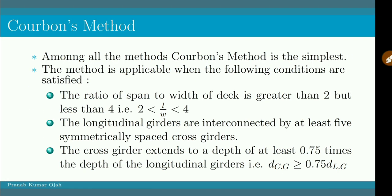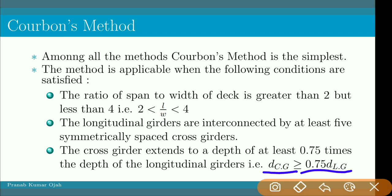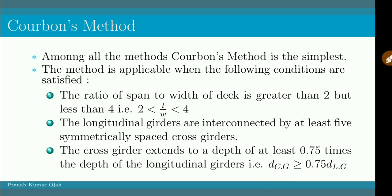The third condition is that the cross girders must extend to a depth of at least 0.75 times the depth of the longitudinal girders — meaning the cross girder depth should be at least 75% of the longitudinal girder depth. If these three conditions are satisfied for a T-beam deck slab type of bridge, then we apply Corbain's method.